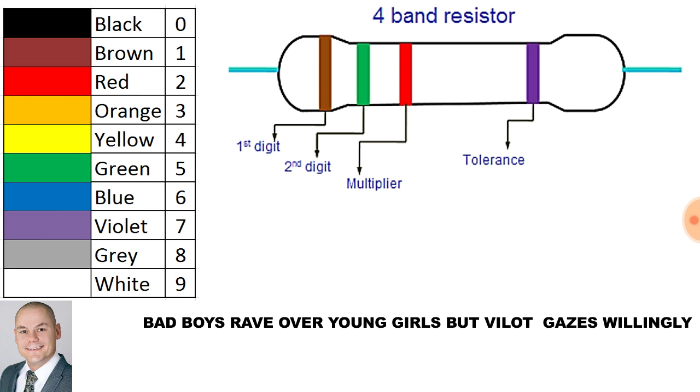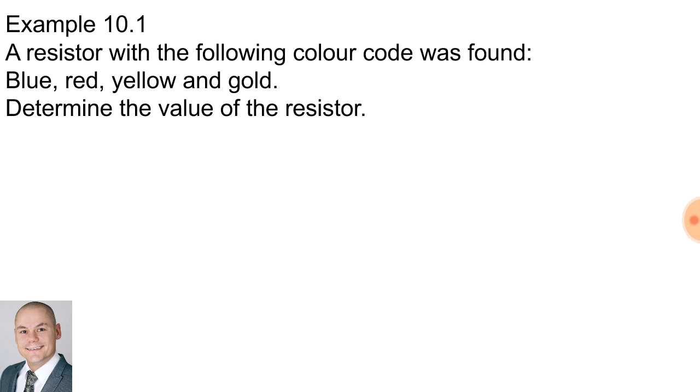To understand this, let's do an example. A resistor with the following color code was found: blue, red, yellow and gold. Determine the value of the resistor. So first let's write down those colors: blue, red, yellow and gold.